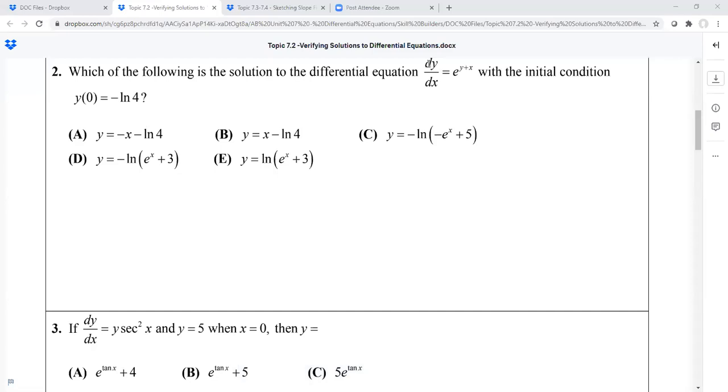So we are going to do number two and three from worksheet seven two for you. The first one says which of the following is the solution to the differential equation dy over dx equals e to the y plus x power with the initial condition that y of zero equals negative natural log of four.